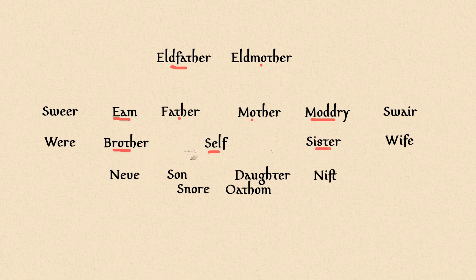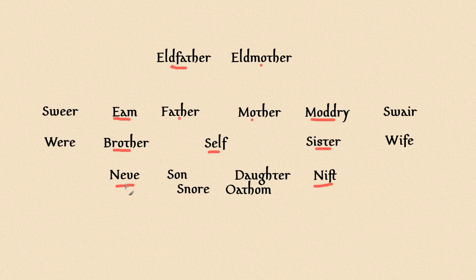Of course, you have brothers and sisters. The male child of one of your siblings is a neve, and a female child is a nift. These terms can also double as grandchildren terms, so a grandson can be a neve and a granddaughter can be a nift.